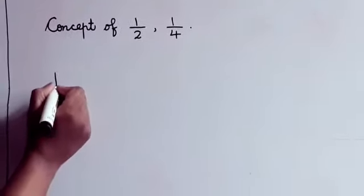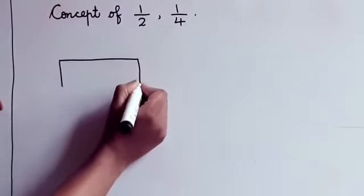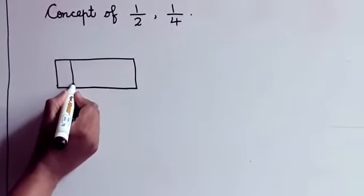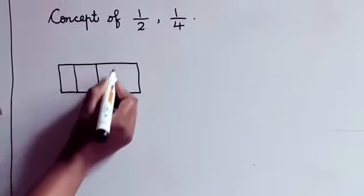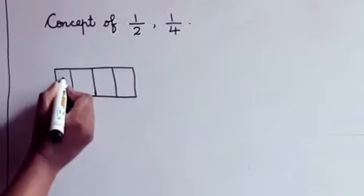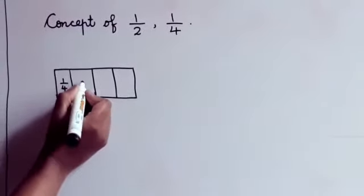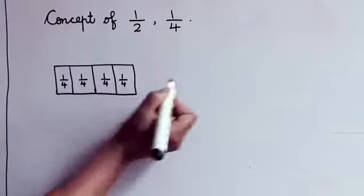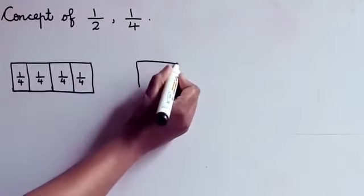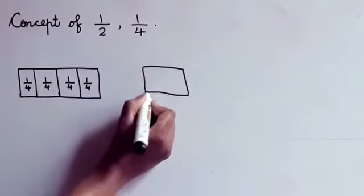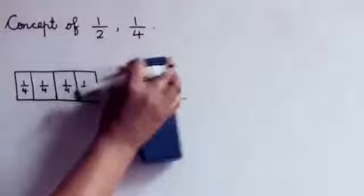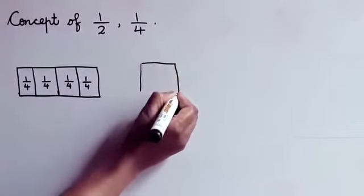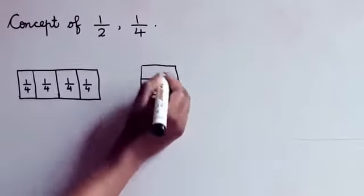We are going to make a rectangle and we will divide it into four equal parts. So each part is called one fourth. Do you understand everybody? Now we are going to make a square and again we are going to divide it into two equal parts.